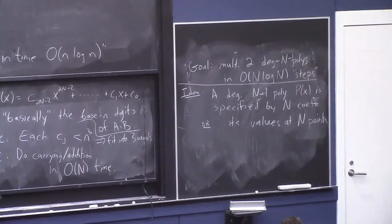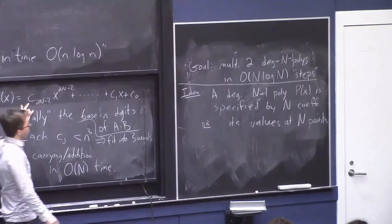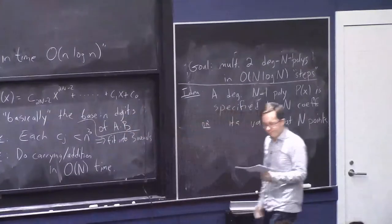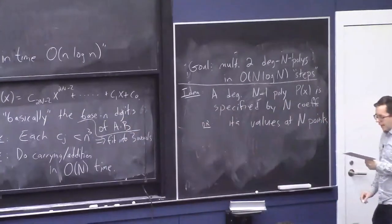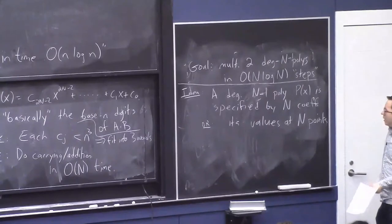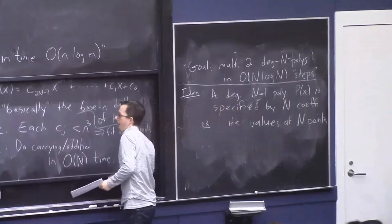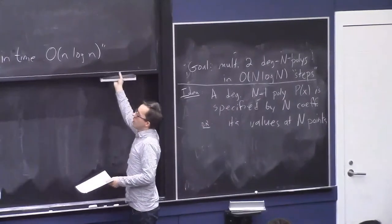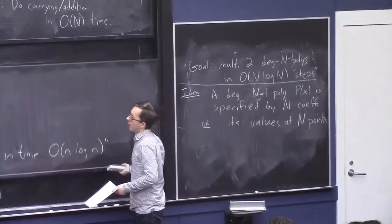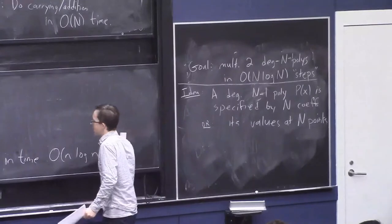So what we know is, sort of the input, is the n coefficients of p and the n coefficients of q. And what we are trying to get out are basically the 2n or so coefficients of p times q. Now, I'm just going to show that the representation of data makes a big difference.